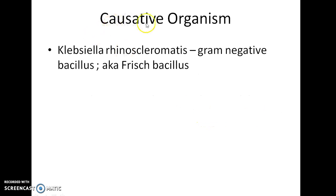What is the causative organism of Rhino Scleroma? Rhino Scleroma is caused by a gram-negative bacillus called Klebsiella Rhinoscleromatis. It is also known as Frisch Bacillus.